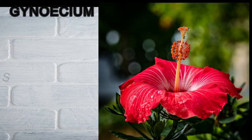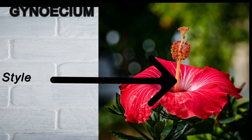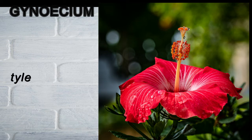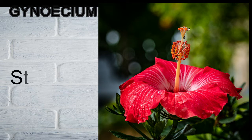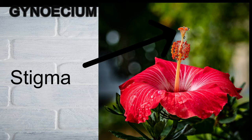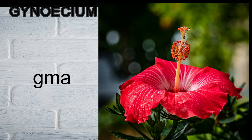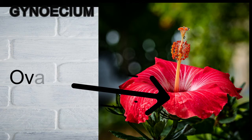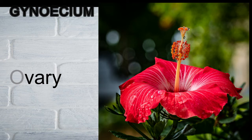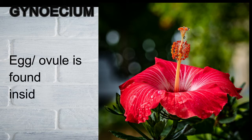For the gynoecium, we have the long stick-like style and the stigma at the top. We also have the ovary, which is found inside at the bottom region and is not visible here, but it is still there. Inside the ovary we can find the egg, or the ovule, and that is where fertilization occurs.